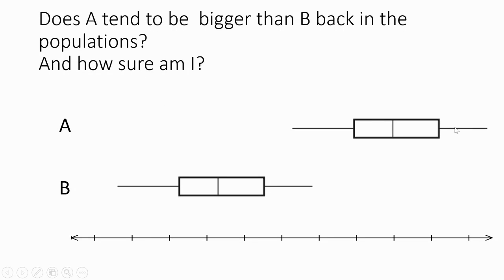What we're looking at is a sample from two populations and we're interested in whether A tends to be bigger than B back in the populations. We have a sample — these are the samples — and remember the samples will jitter. So this one here may be there but in reality it could be anywhere in this area. This is B and this is the sample box that we got, and with the jitter that happens with samples, we would imagine it to be jittering along there.